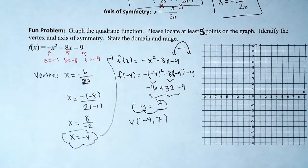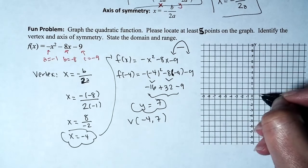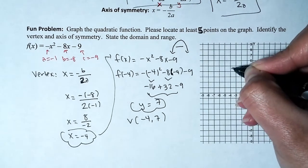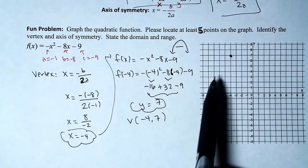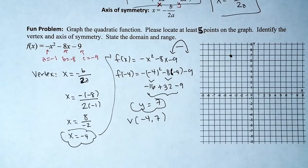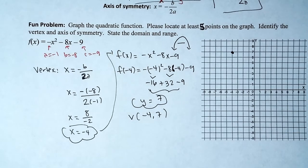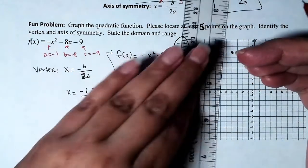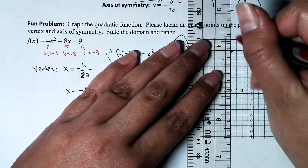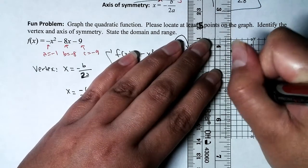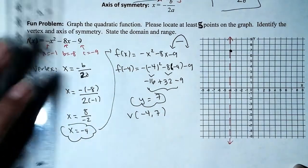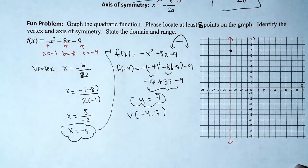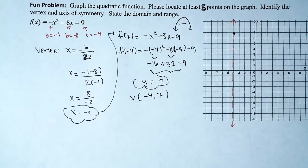Let's go ahead and graph it. The vertex is at negative 4, 7 — four to the left, seven up. We've established the parabola opens down, so our math should reflect that. For extra credit, let's also graph the axis of symmetry, which is the vertical line through the vertex. This helps quickly identify additional points without crunching more numbers.